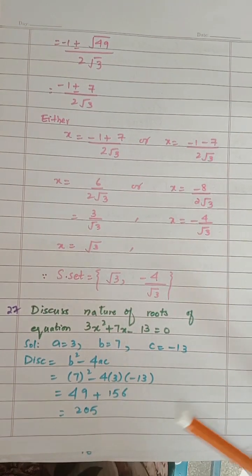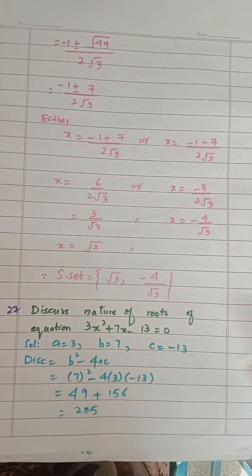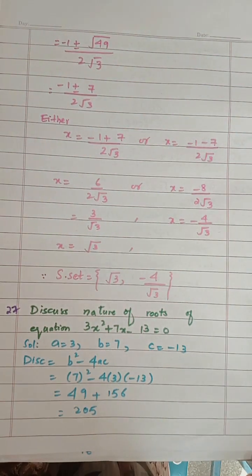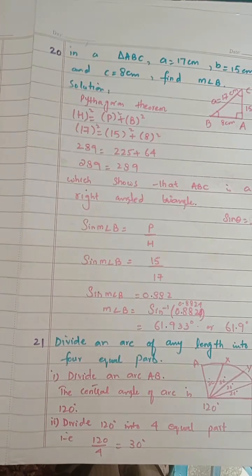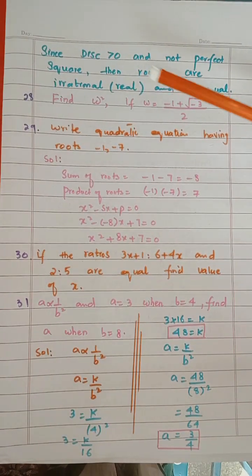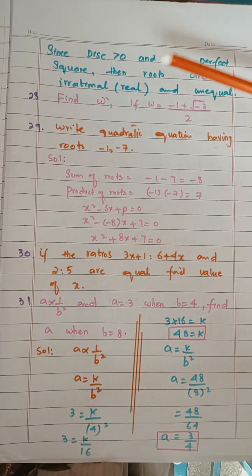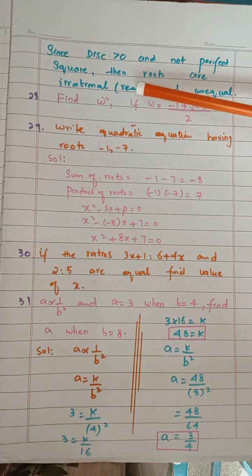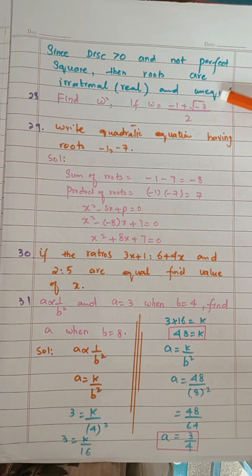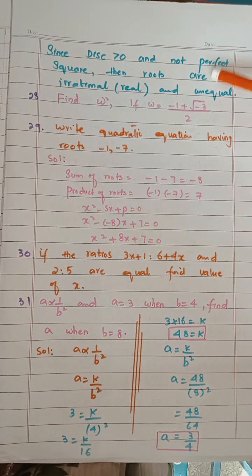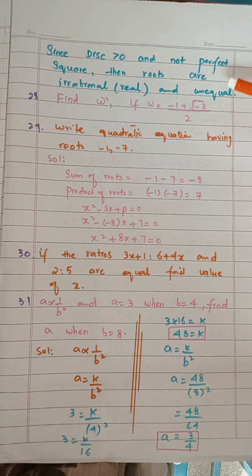Put the values into the discriminant. Your answer is 205, which means it is a positive number. Number two, it is not a perfect square — it is a non-perfect square number. So we write: since the discriminant is positive and not a perfect square, the roots are irrational, real, and unequal. If you don't mention this, you will not get marks because he is asking the nature of the roots.